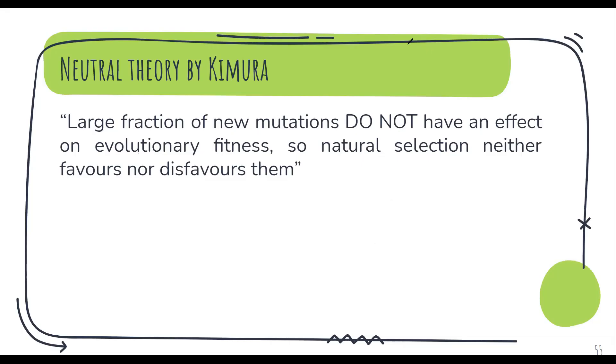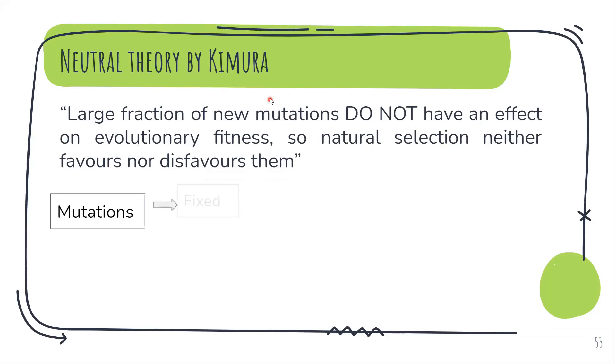So then what will happen to such mutations? There are two options. Option A is the mutation is fixed. That is it is carried forward or it is lost. And how is it lost? By genetic drift.